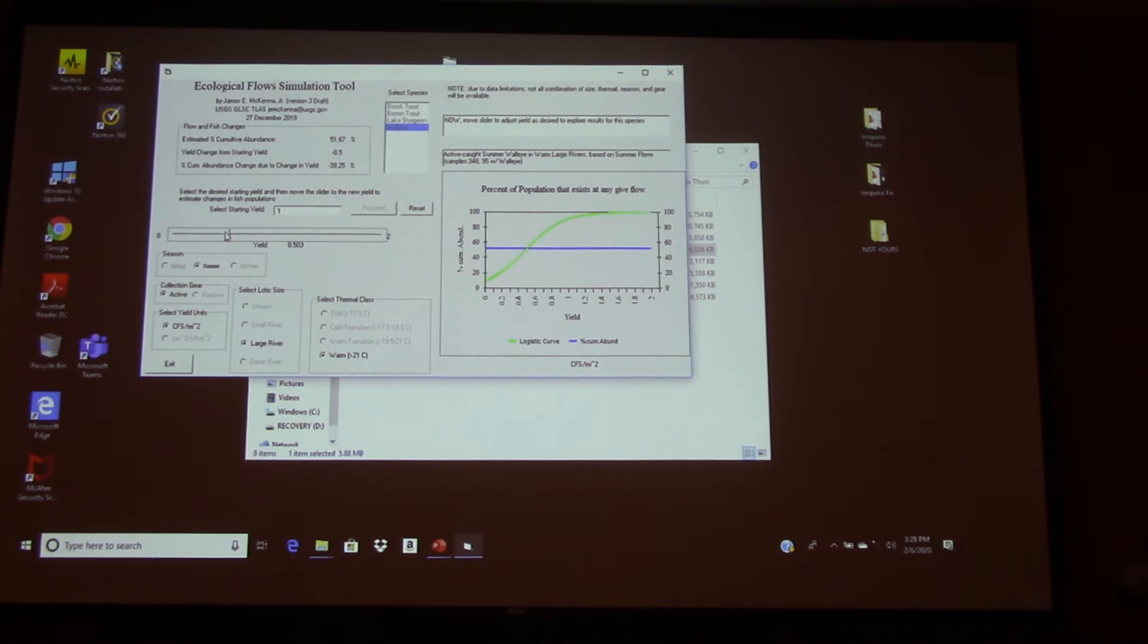So the same game can be played if you raise it up to one and a half, which would be a half above. And you see that the line just about pegged at the top and now supporting 99% of the walleye that could be supported there.